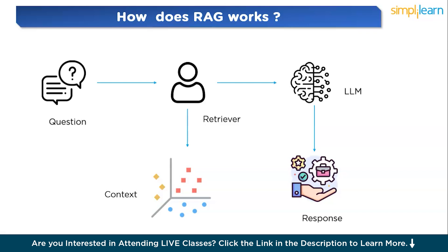For example, you might get a response like: 'Your order #12345 was shipped on March 28th and is expected to arrive by March 23rd — you can track it here.' This integration of information retrieval with natural language generation is highly efficient for both businesses and customers, reducing the workload on support agents while providing real-time, precise, and human-like responses.